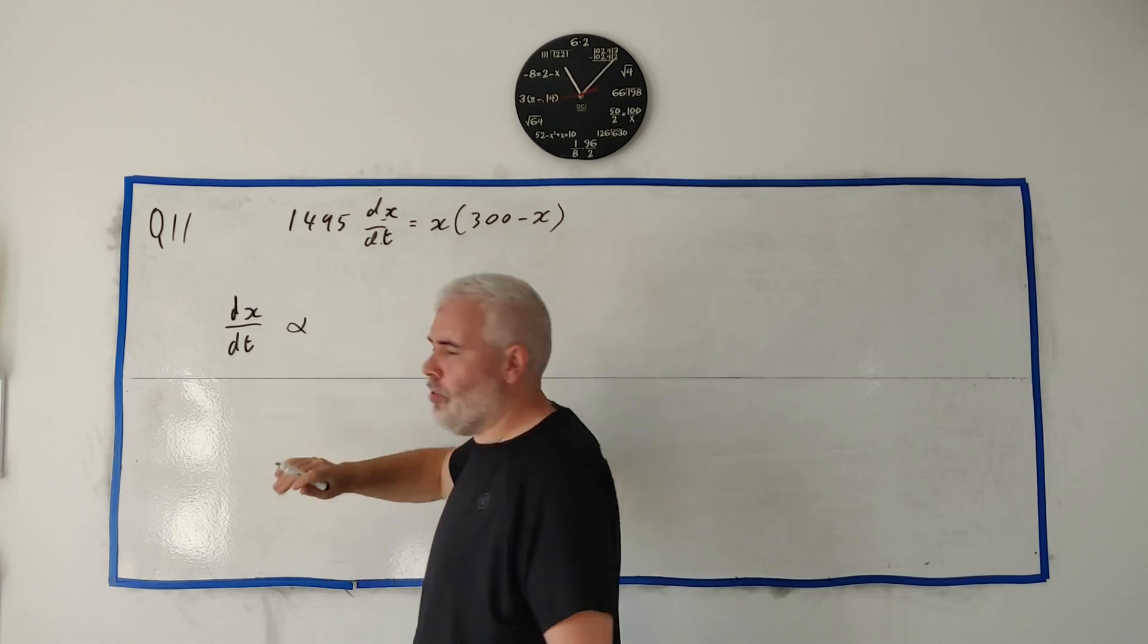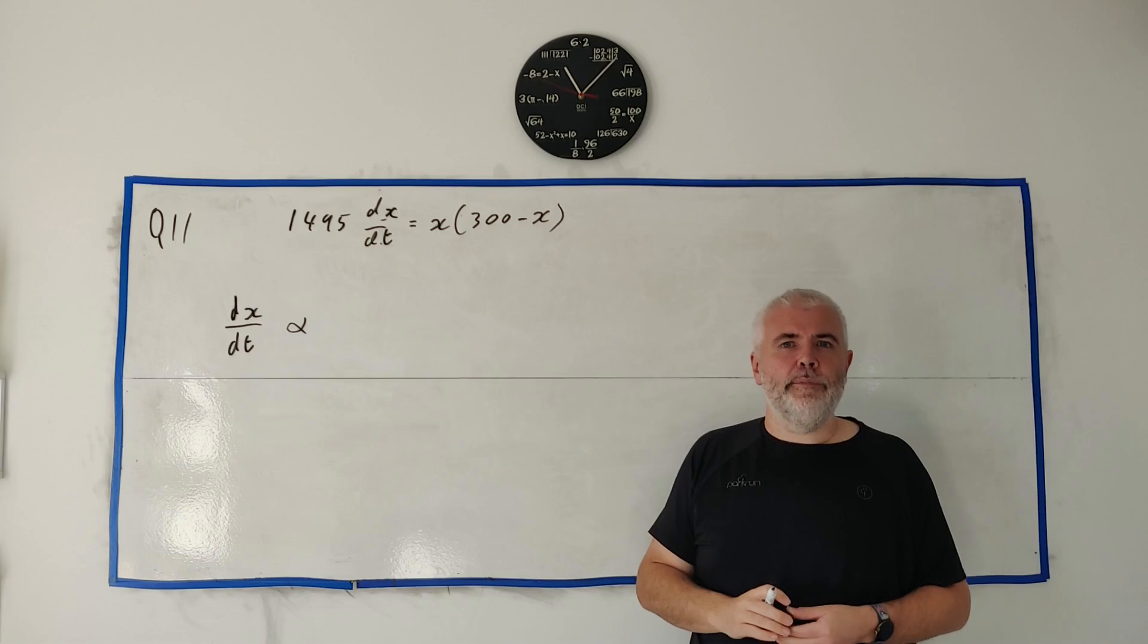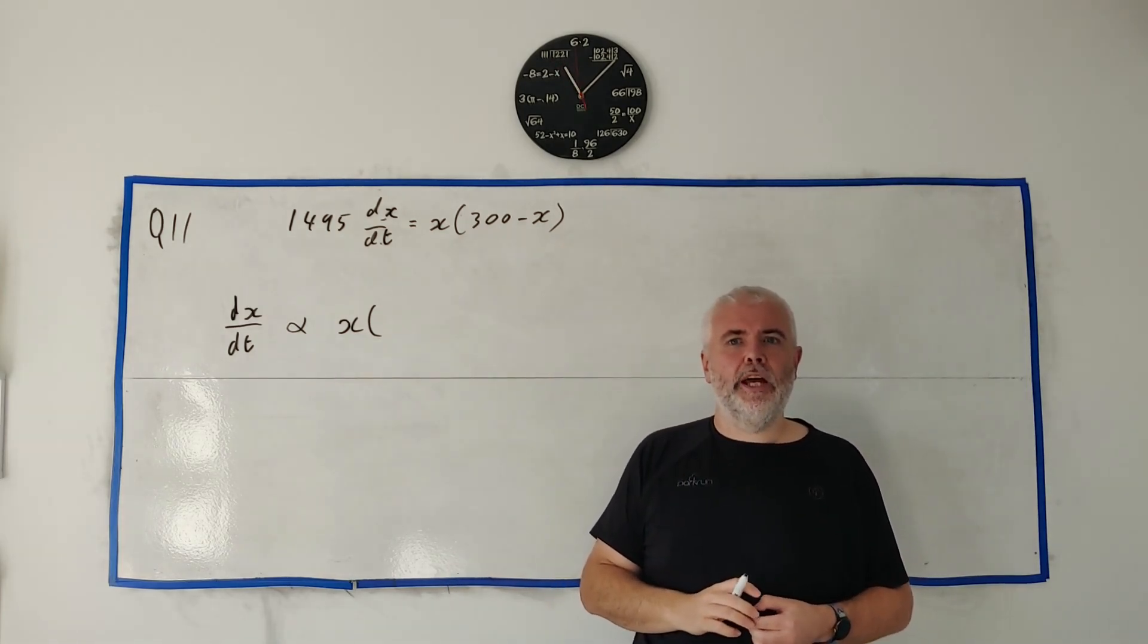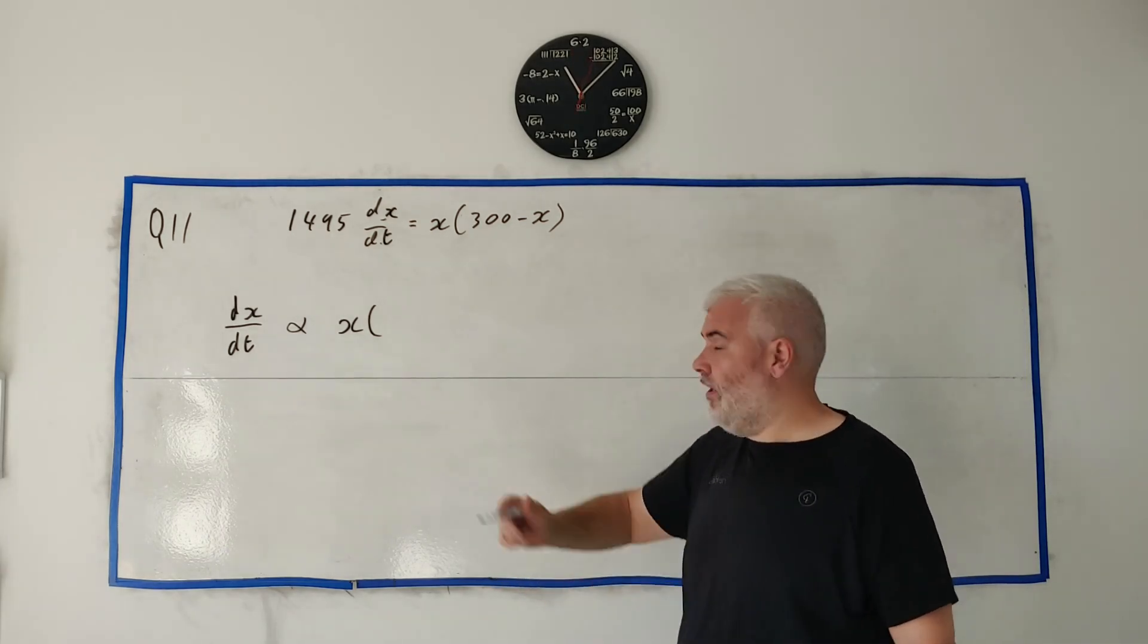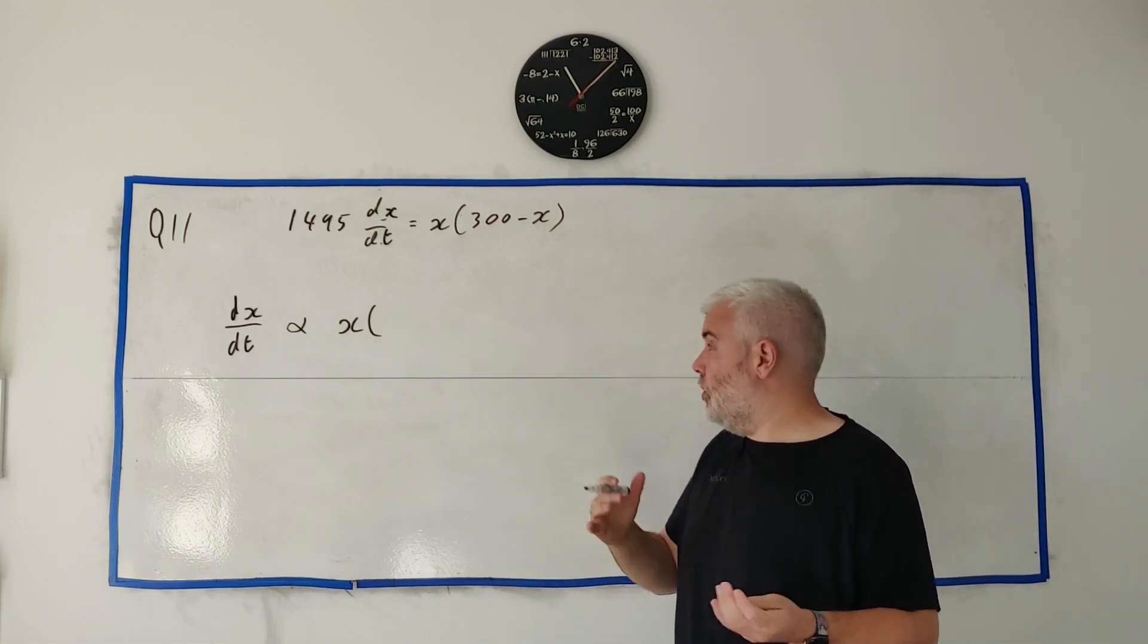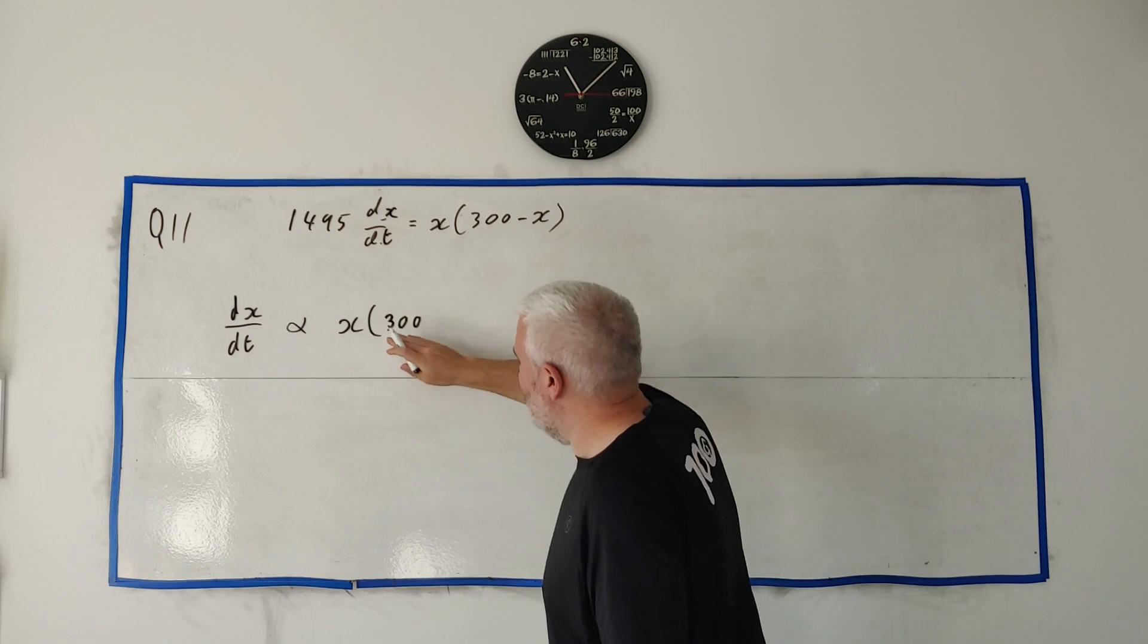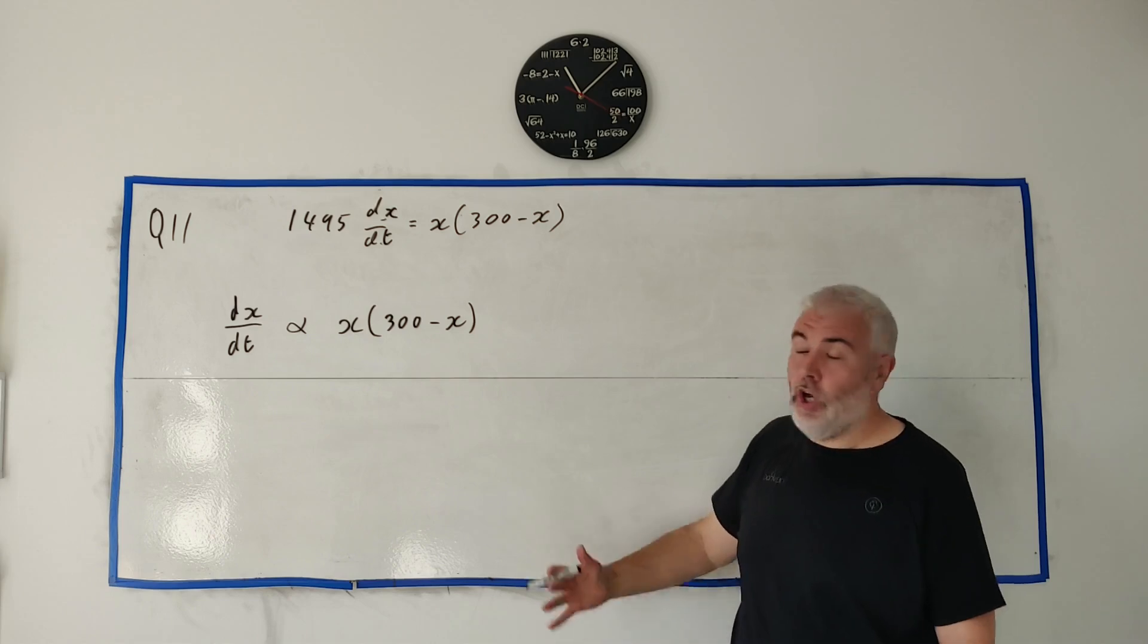So, we write proportional like this to the product, that's multiply, the product of the number of plants. So, that's X. X is the number of plants. The product of that multiplied by the number of plants not infected. So, how many plants aren't infected? If X are infected, so let's say that's 10. How many are not infected? Well, there's 300 total, 300 minus 10. Or, more uniformly, it'd be 300 minus X. That's how many are not infected.